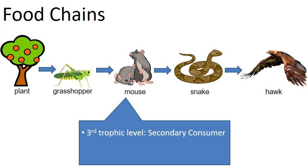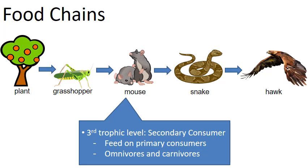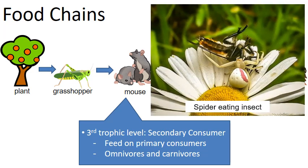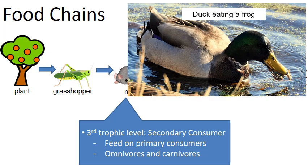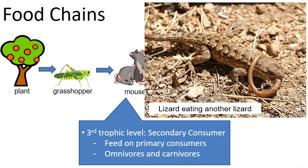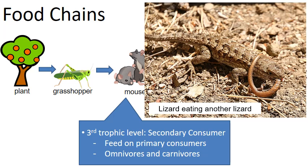Moving to the third overall trophic level, we have the secondary consumer — the second consumer. The secondary consumer feeds upon the primary consumers beneath them. At this level we start to see omnivores, which eat both plants and animals, and some small carnivores. Examples include a spider eating an insect, a duck eating a frog, and a larger lizard eating a smaller lizard.